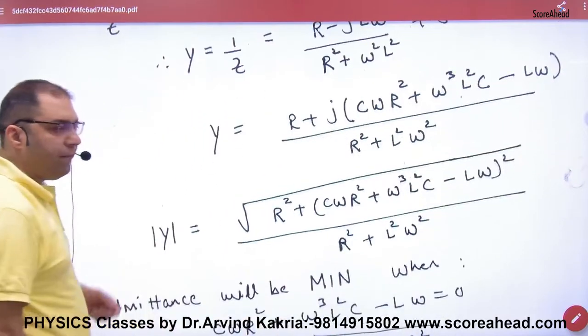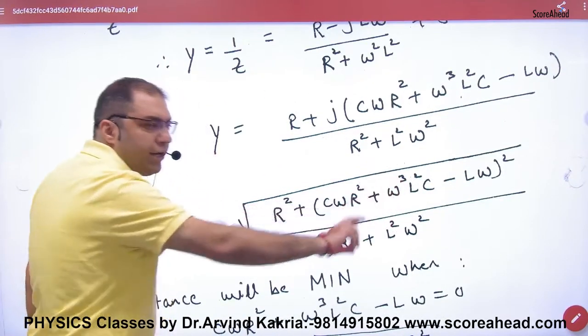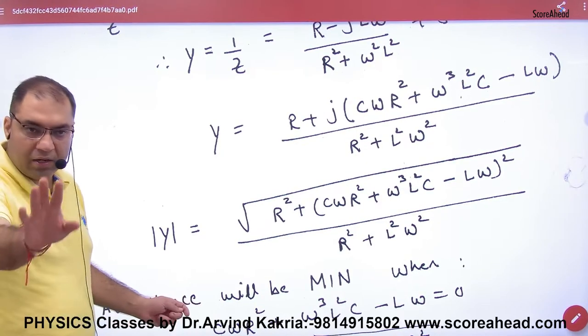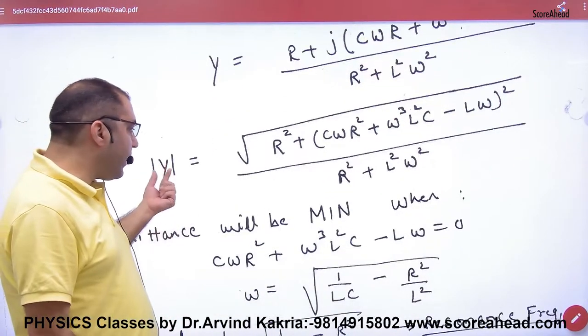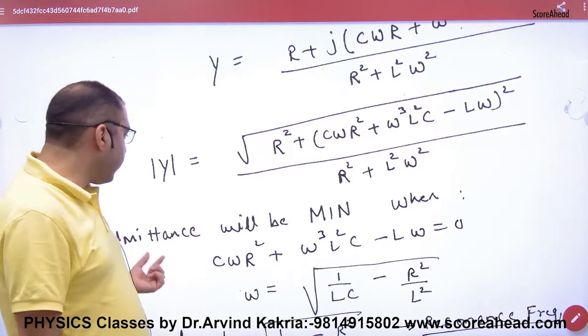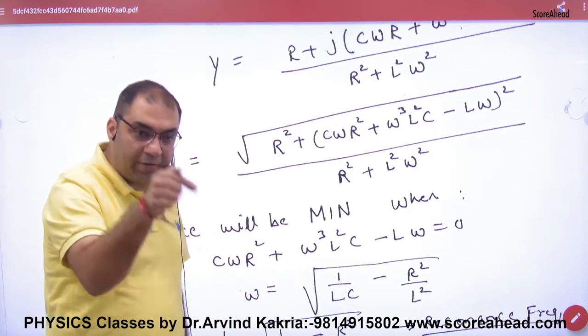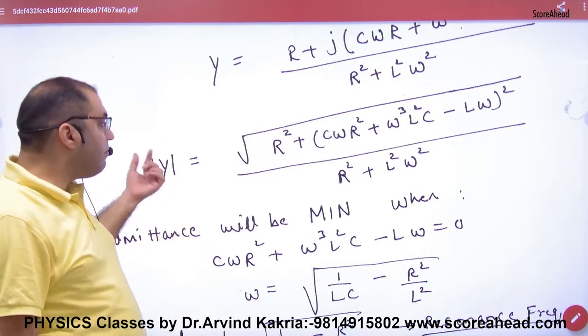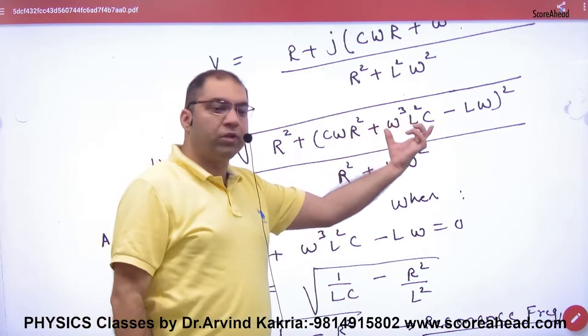Y ko simplify karke, yeh term magnitude aagaya Y ka, aapne kuch nahi karna, koyi tension nahi. Aapne kya karna hai, abhi mark karvahata hu. Isme agar Y admittance, agar mujhe kya karna hai, minimum. Admittance minimum hogi, to impedance kya hogi, maximum. To isko agar minimum karna hai, to yeh term ko kya put karna padega, zero.